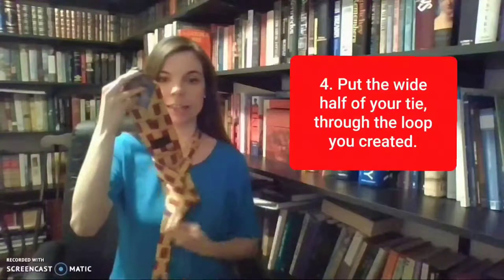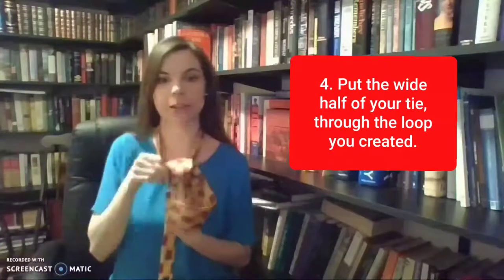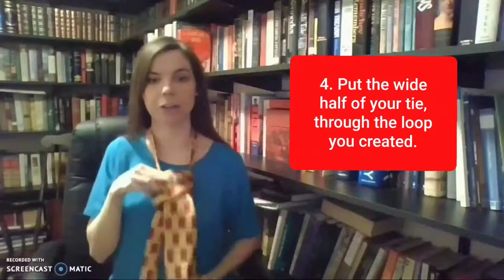When you come through here you will see that you have now created this loop. This loop is where the wide part of your tie is going to go under. That's going to actually create the knot that you see up at the neck of a tie. So I'm going to pull the wide part down.